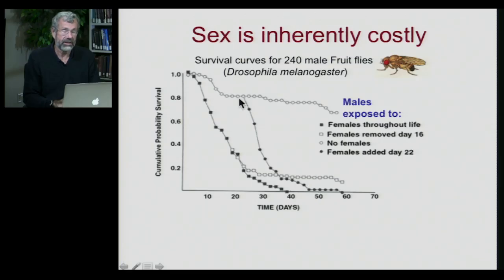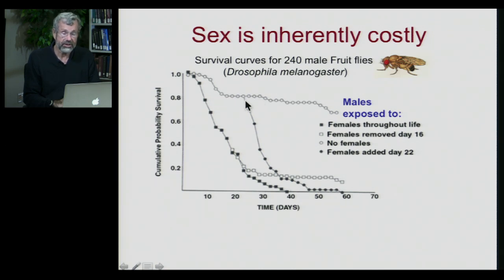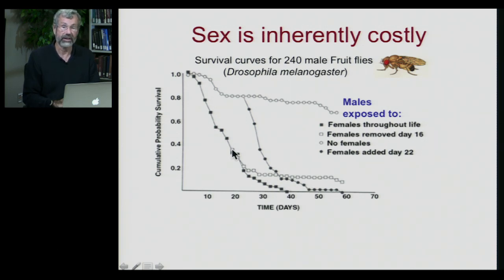If we take the males out of their monastery and allow them to start mating, then they start dying. Even though their mortality rate was very low, once they start breeding with females they start dying like flies again. And if we take these playboy flies and protect them from the cost of further mating, they stop dying and their survival is really okay.